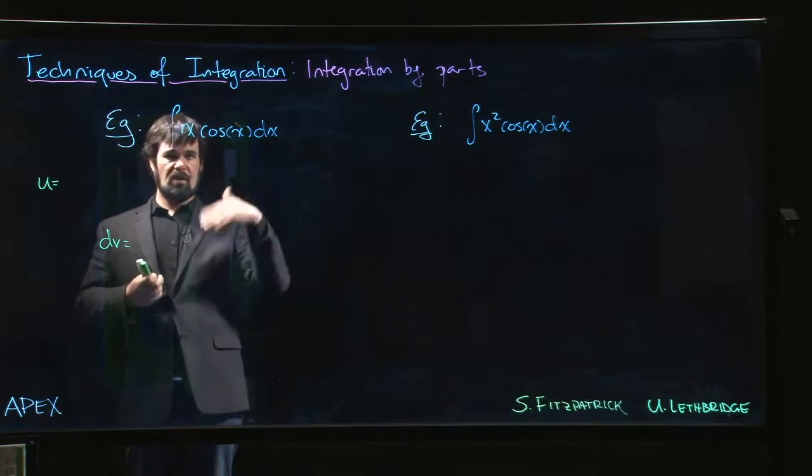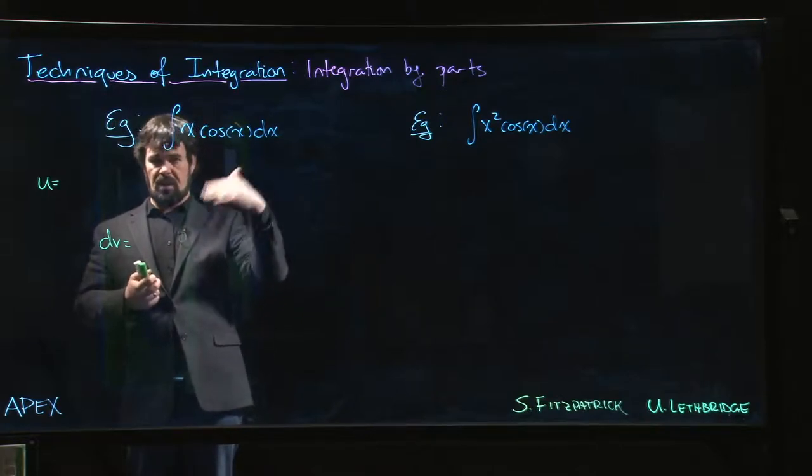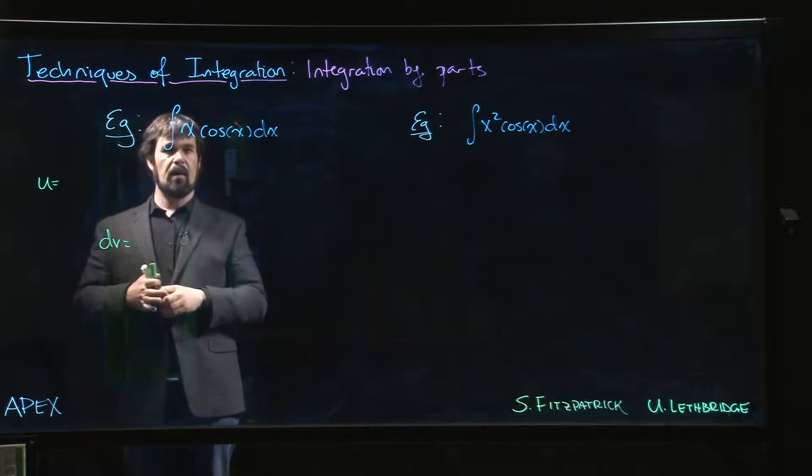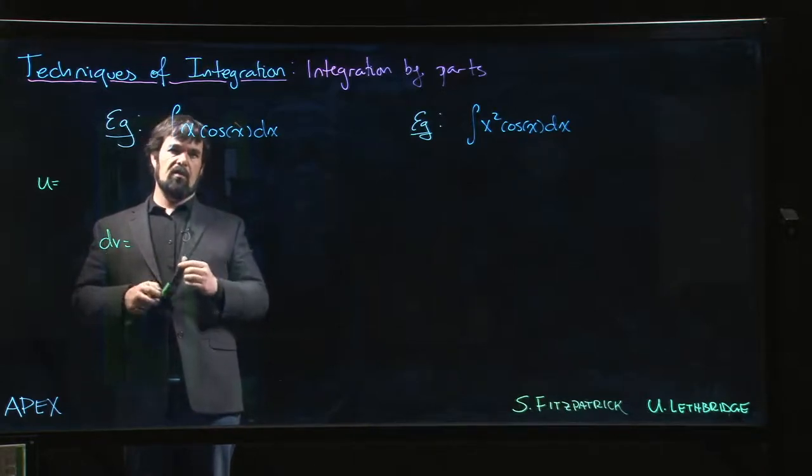Both trigs and exponentials, right? They just sort of, well, sine, cosine, e to the x, they kind of bounce around. They don't go anywhere. So you don't really get a lot of simplification.